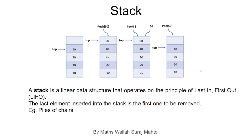We will perform a push operation. Whenever you push, we have a data type with a value passed that we insert into that particular function. So we insert 15 here — just push 15. The new stack, after insertion of 50, will look like this. And the top element will change from 40 to 50.